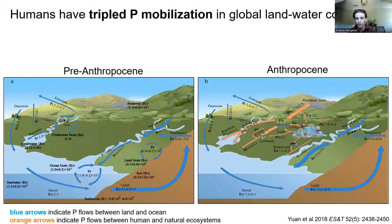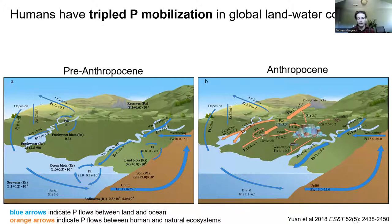A good place to start is considering the Anthropocene — the great acceleration. After World War II, you see hockey-stick curves for CO2, population, fertilizer use, wealth, crop yields — everything accelerating. Phosphorus is no exception. Pre-Anthropocene, the blue arrows show baseline non-human flows. In the Anthropocene, we now have larger orange-yellow arrows showing a larger flux of phosphorus, all originating from phosphate rock — a global summary.